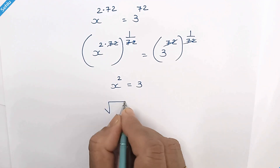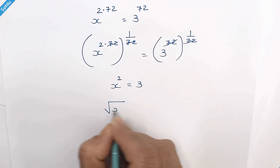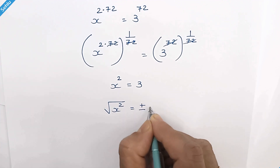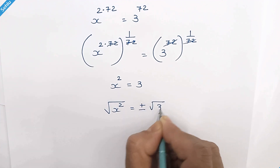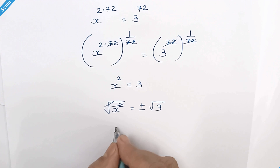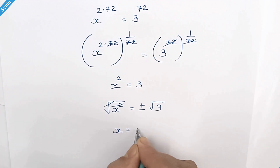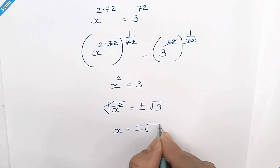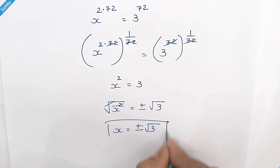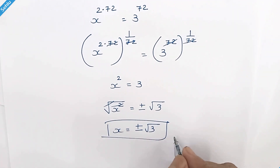Square root both sides. The square and square root cancel each other. Now we have x is equal to plus or minus square root of 3 as the answer. Let's quickly verify.